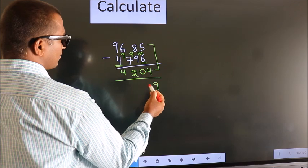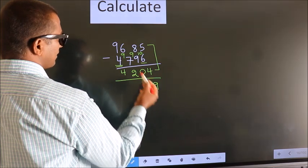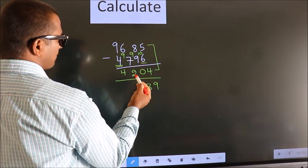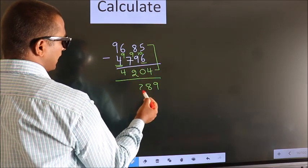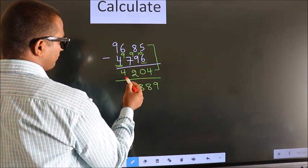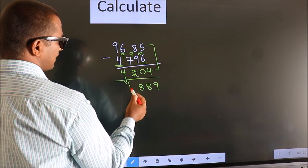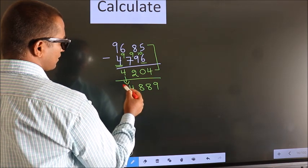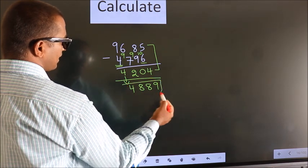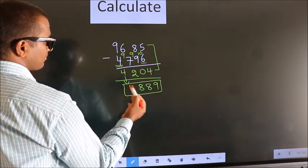8 plus 0 is 8. 6 plus 2 is 8. The first digit we write down as it is. So this is our answer.